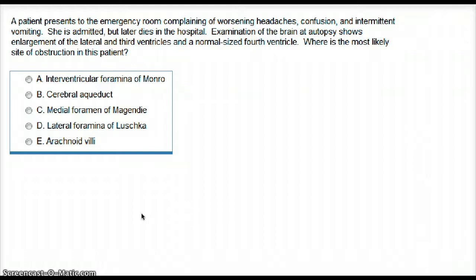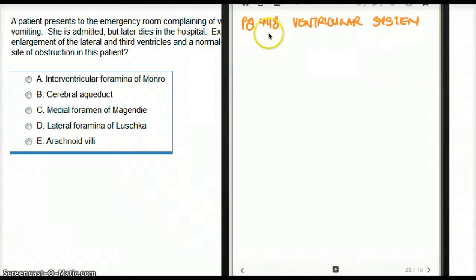The most likely site of obstruction is the cerebral aqueduct, which is between the third and fourth ventricle. You can read more about this on page 448, First Aid 2012.